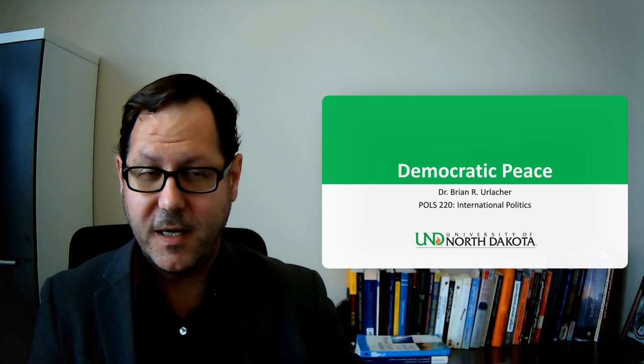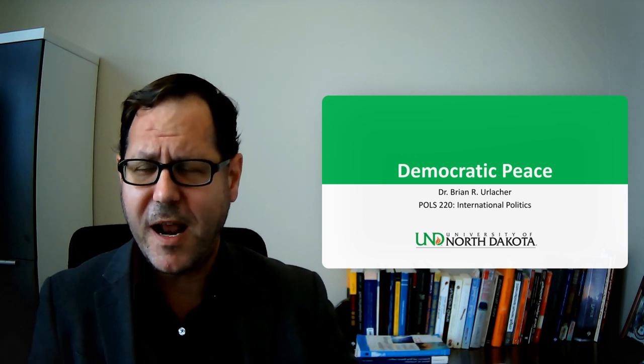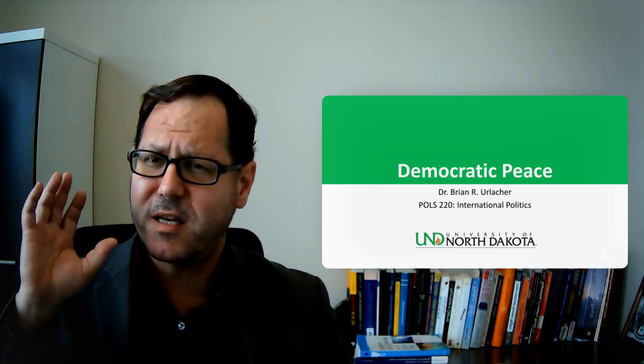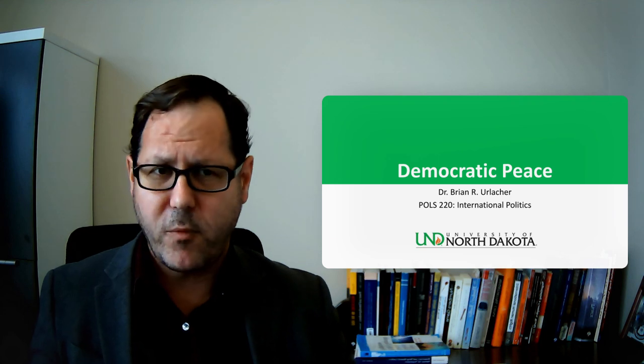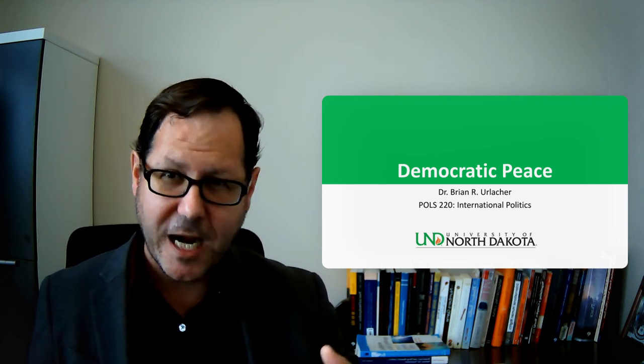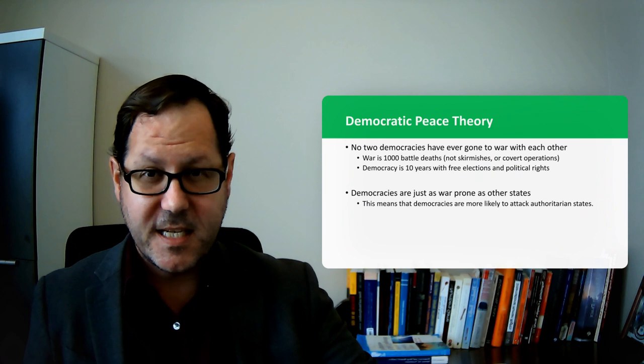So the democratic peace theory connects with a number of themes that we've been talking about over the course of this class, one of which is the Kantian tripod of big changes in the international system that Immanuel Kant was pointing to in the 19th century that he argued would cause the international system to trend toward greater peacefulness. It also connects with the unsteady march of freedom and that trajectory of the international system toward greater democratization that we've seen over the last 50, 60, 70, 80 years.